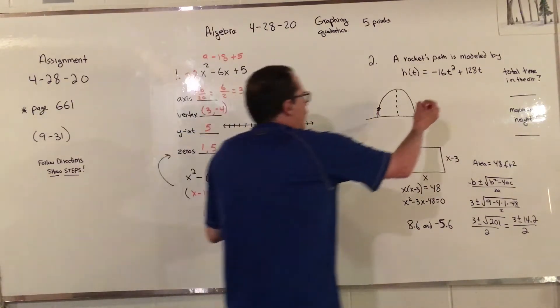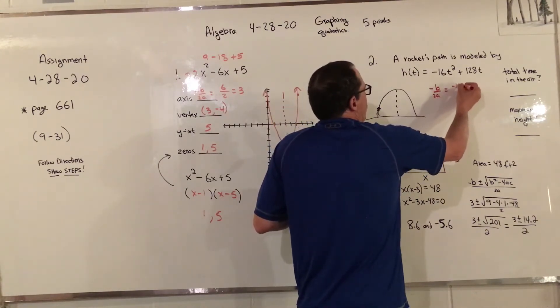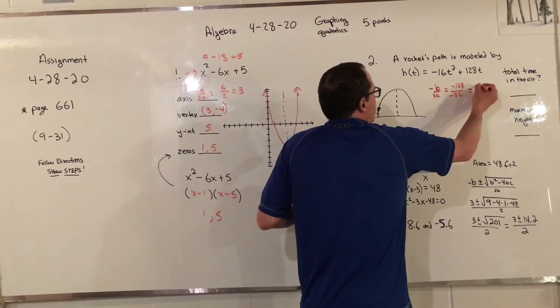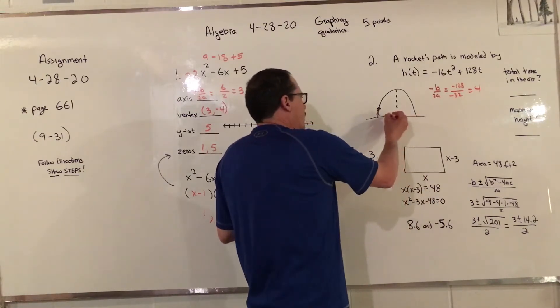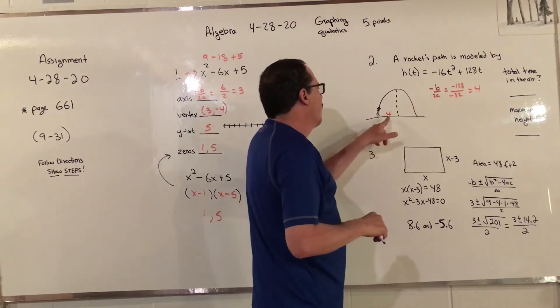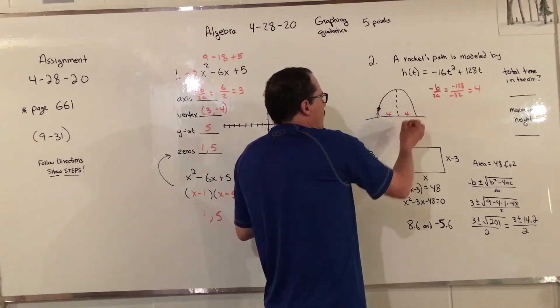On these problems you just do what we did over here. You start with negative b over 2a, so that would be negative 128 over negative 32, which equals a positive 4. What that means is that it takes 4 seconds to reach the maximum height.